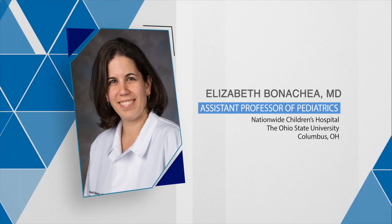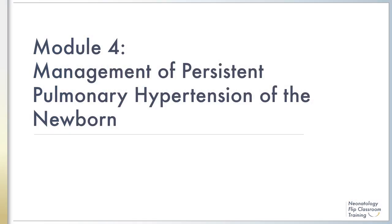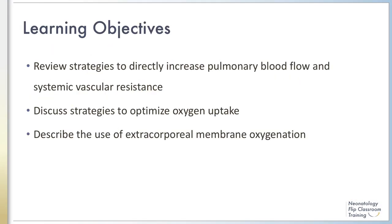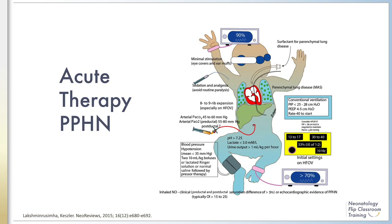In the fourth and final module of this program, we will discuss the management of persistent pulmonary hypertension in the newborn. We will review the management of PPHN from the framework of three groups of strategies: directly promoting pulmonary blood flow, indirectly promoting pulmonary blood flow via increased systemic vascular resistance, and optimization of oxygen uptake. Finally, I will describe the indications and salient features of the use of ECMO in this population.